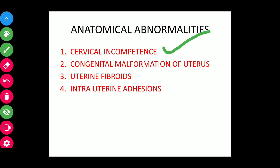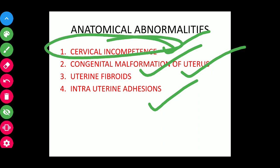Next, anatomical abnormalities include cervical incompetence or cervical insufficiency, congenital malformation of the uterus, uterine fibroids, and intrauterine adhesions. Cervical incompetence or insufficiency — either congenital or acquired — is one of the most common causes of mid-trimester and recurrent abortion. Congenital malformations of the uterus, such as bicornuate uterus or septate uterus, may be responsible for miscarriages.